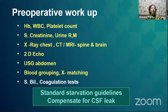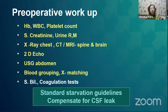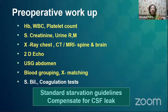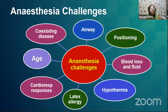Preoperative workup: Hb, CBC, platelet count. WBC count might be elevated if the patient has systemic infection. MRI of both spine and brain would be required. If the patient is syndromic, 2D echo will identify associated cardiac anomalies. USG of abdomen would be useful. Grouping and cross-matching should both be done as surgery is often associated with blood loss. Standard starvation guidelines apply, but if there is significant CSF leak, that volume needs to be compensated.